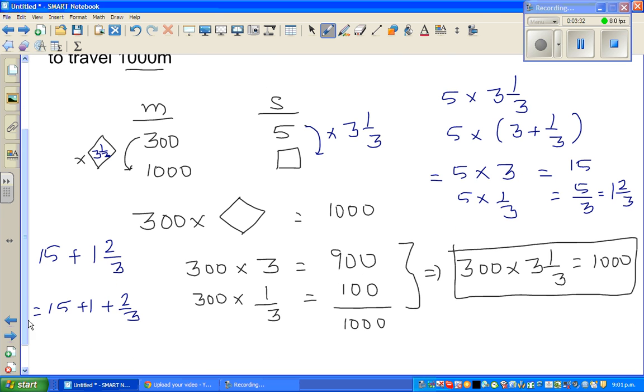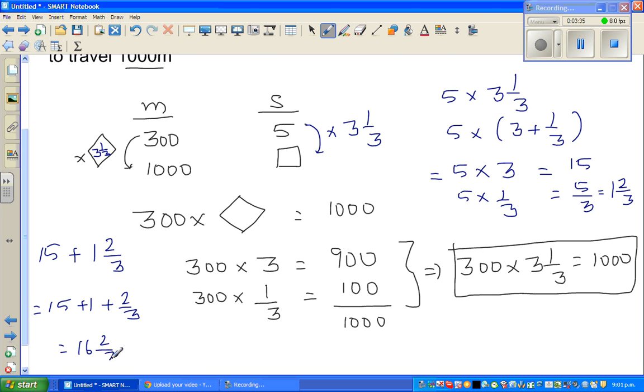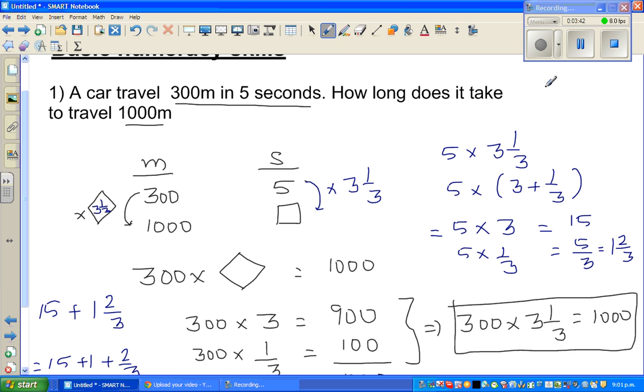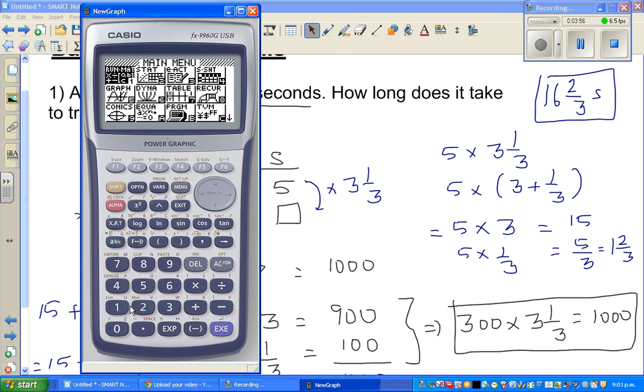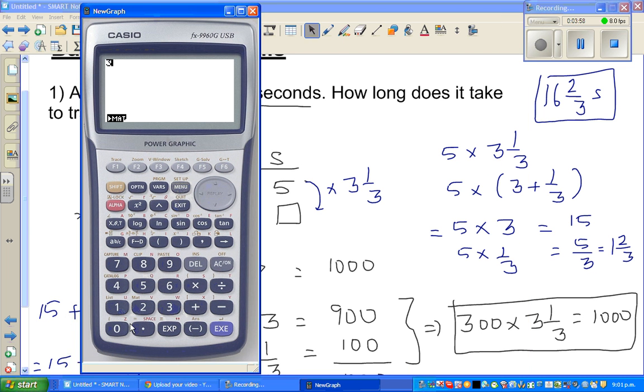Which is 15 plus 1 plus 2 thirds. So you need 15, 16 and 2 thirds seconds to be exact. To cover, if you're going the same speed, you need 16 and 2 thirds seconds. I'll show you this on a calculator to explain this. So this is my calculator. So I say that 300 times 3 A, B, C, 1, A, B, C, 3 is 1000.